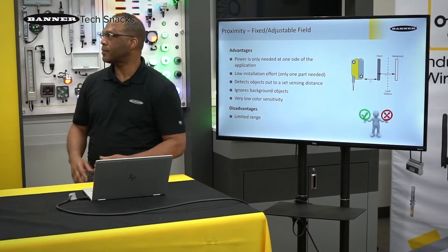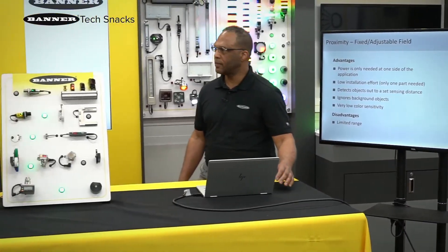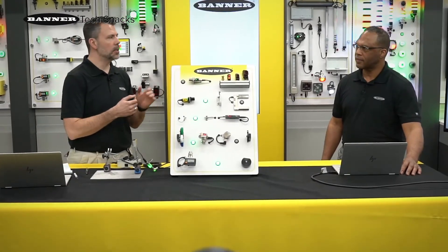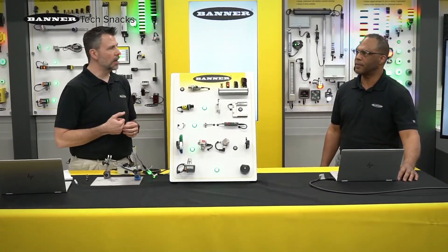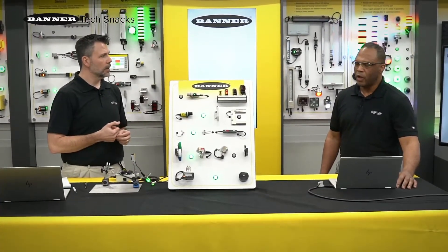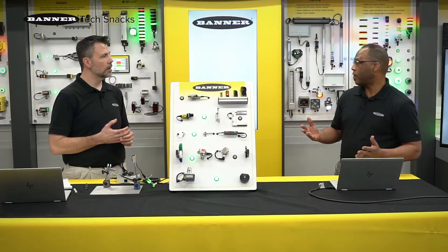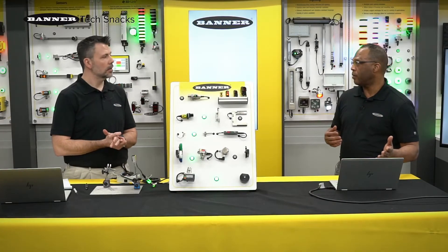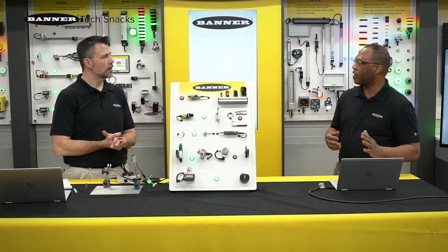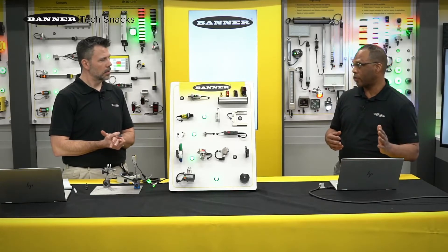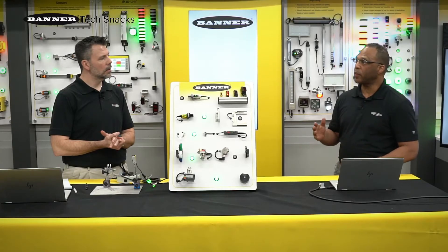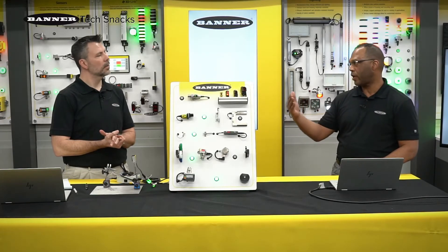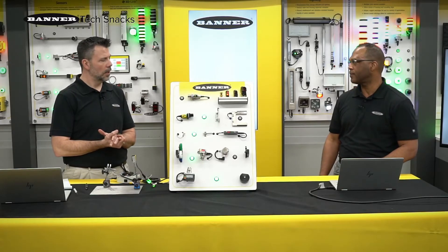In proximity mode, Daryl, which of those modes would be best for an application where you have to pick up a registration mark on a product going by? With that one, depending on the application, fixed field might be really good because you may have something in the background that you want to ignore when that registration mark is gone. Or adjustable field, because that gives you the ability to dial it in even more precisely as to where you need the cutoff to be.